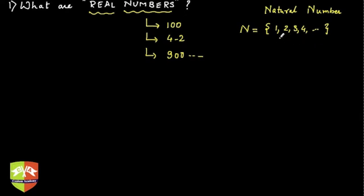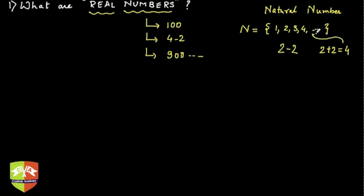When human civilization didn't know about zero — and you may be aware that it was the Indian mathematician Aryabhatta who gave the world the symbol zero — there was no way to represent nothingness. The problem was: what is 2 minus 2? While 2 plus 2 equals 4 belongs to natural numbers, 2 minus 2 had no representation. So humans coined the symbol 0, and zero plus the set of natural numbers gave us the set of whole numbers: 0, 1, 2, 3, and so on.